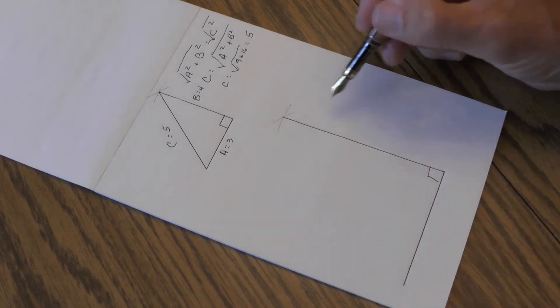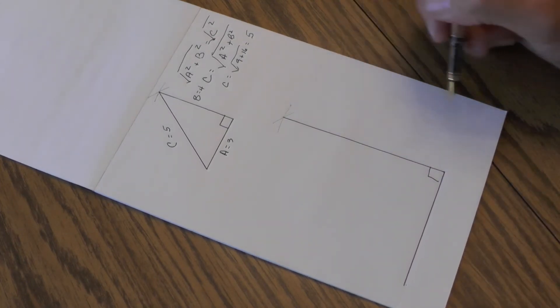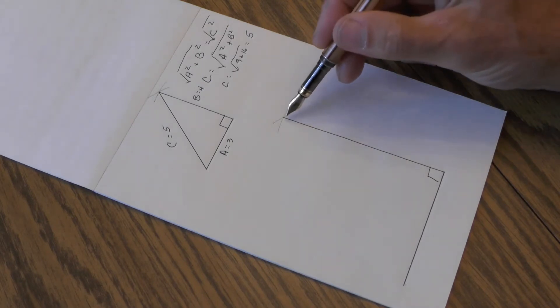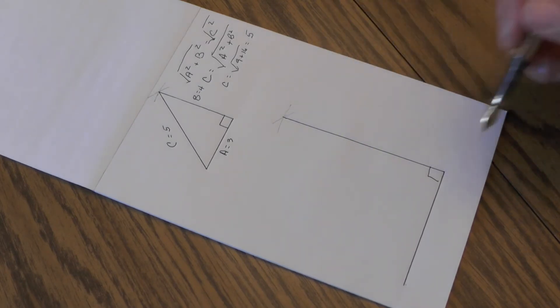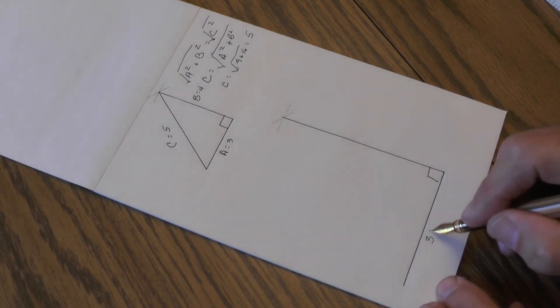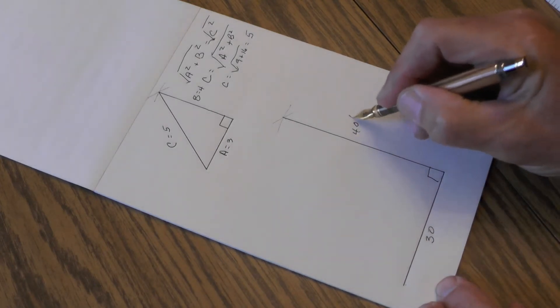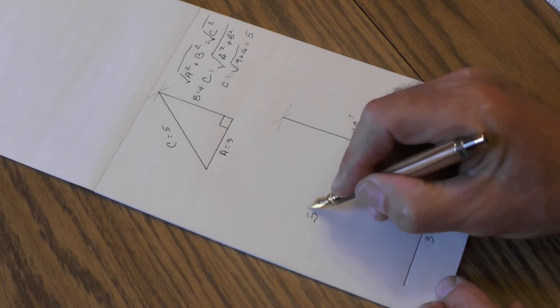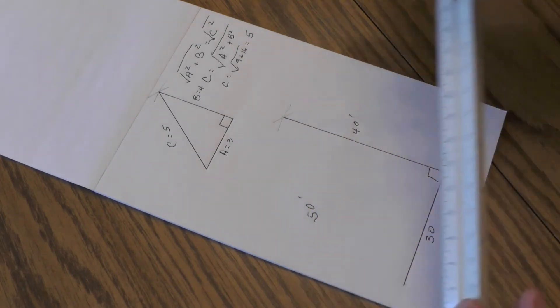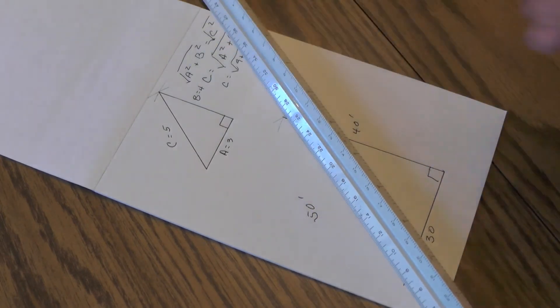Now if we wanted to draw other lines out here that are parallel, we only have to measure off of these two points. Now this works for a 3, 4, 5 triangle, but it also works for any multiple of that. So we could do a 30, 40 foot and a 50 foot triangle if we drew this line in right here. Let's go outside and I'll show you what this looks like in real life.